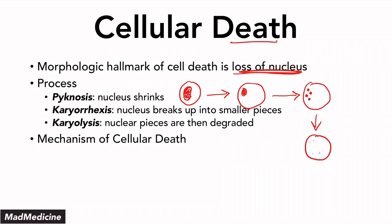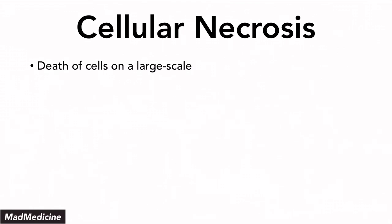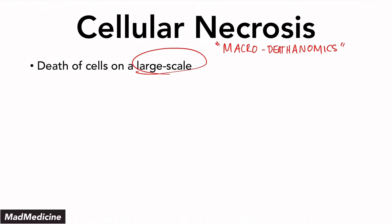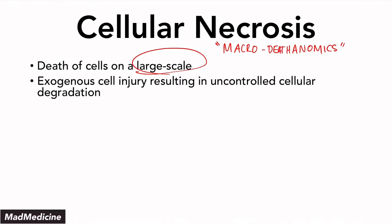When it comes to the mechanisms of cellular death, there are two main things to remember: necrosis and apoptosis. Cellular necrosis is when you have cells dying on a large scale — a macro-level death. I like to think of necrosis as macro-death-anomics, like macroeconomics — it's happening on a larger scale.